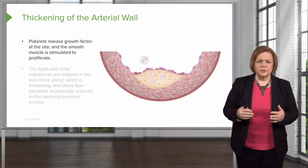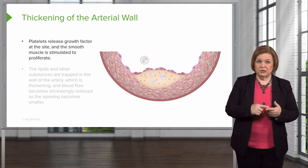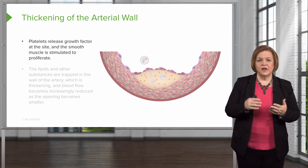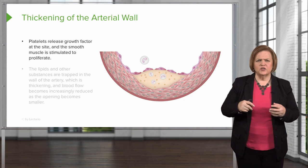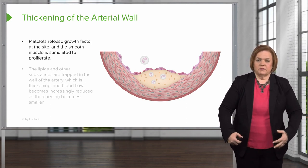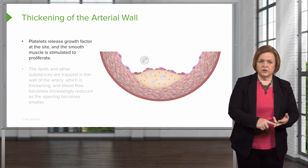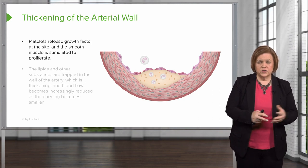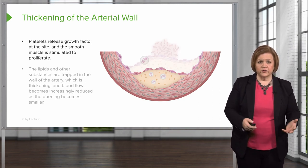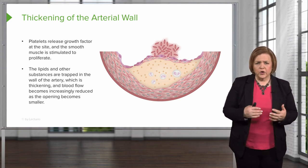Now what happens is the platelets release growth factor at the site. So when platelets release growth factor, things happen. And that smooth muscle that we talked about earlier is stimulated to proliferate. Proliferate just means it's going to get bigger and bigger and bigger. So you've had that damaged area, and the platelets release this growth factor right at the site, so the smooth muscle is stimulated to proliferate.